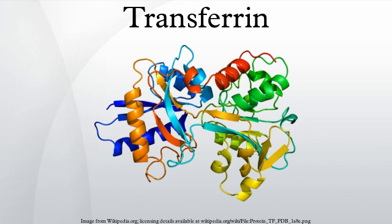The binding amino acids are two tyrosines, one histidine, and one aspartic acid. For the iron ion to bind, an anion is required, preferably carbonate.